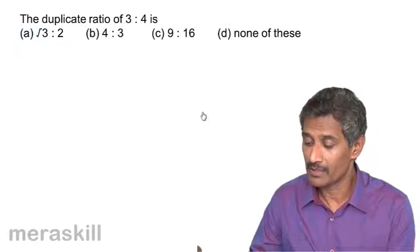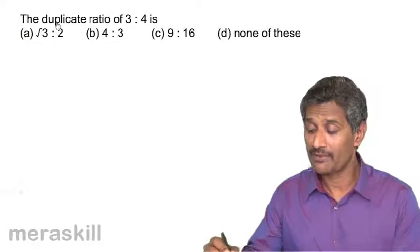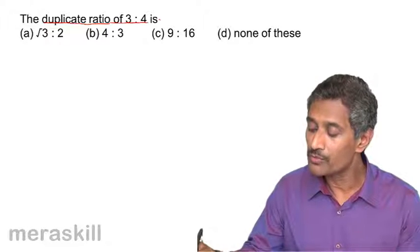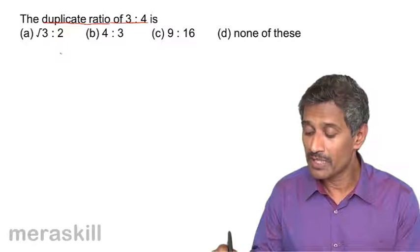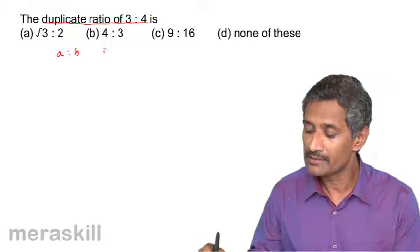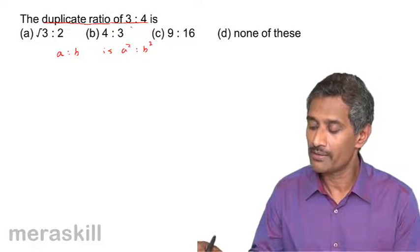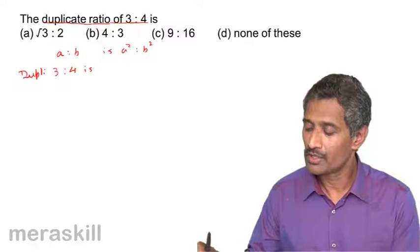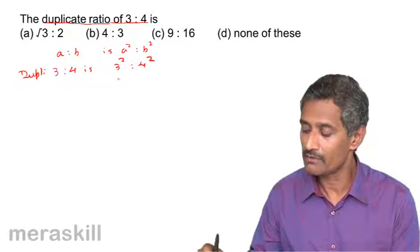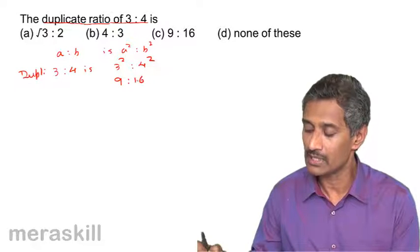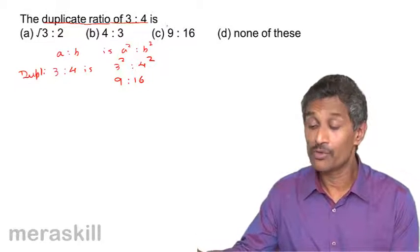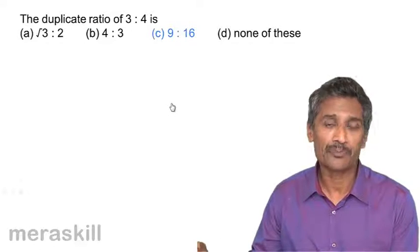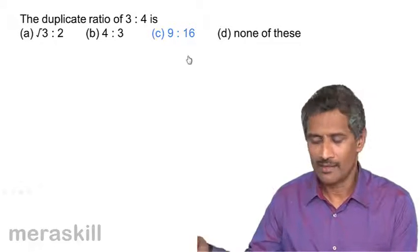Let's apply what we learned. The duplicate ratio of 3 is to 4 — remember, the duplicate ratio of a:b is a²:b². So the duplicate ratio of 3:4 is 3² is to 4², which is 9 is to 16. Hence the duplicate ratio of 3:4 is 9 is to 16.